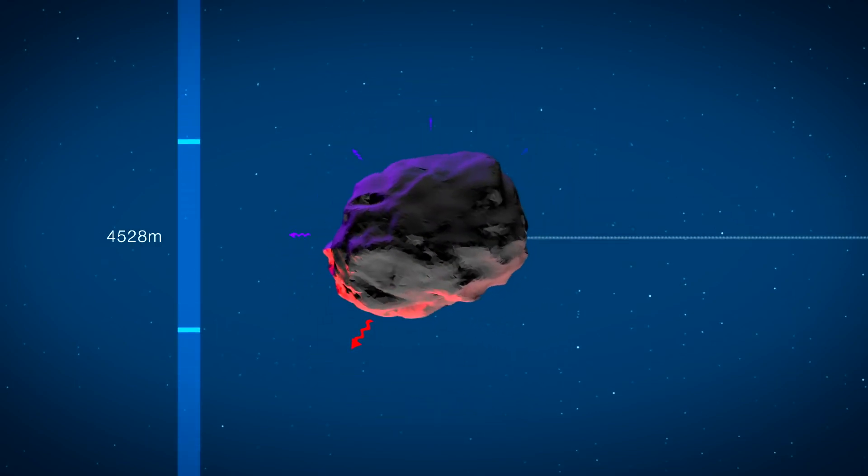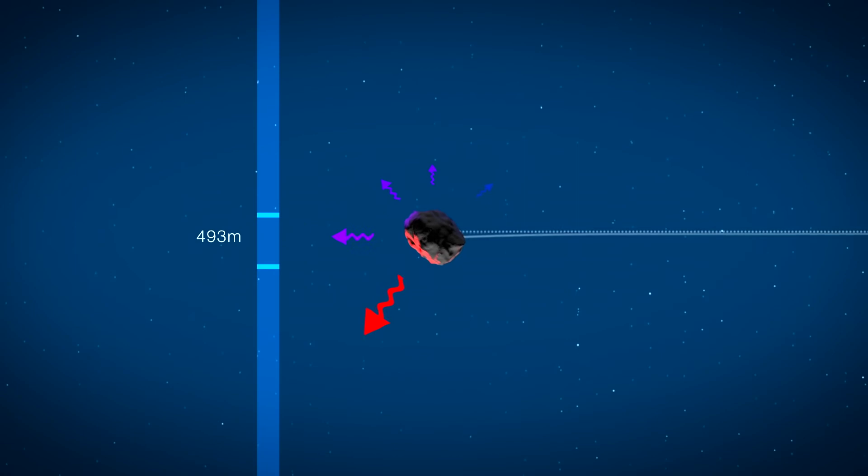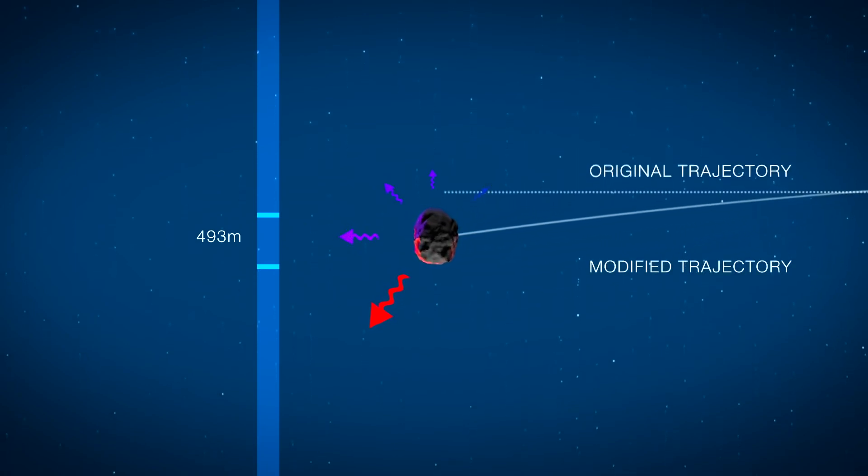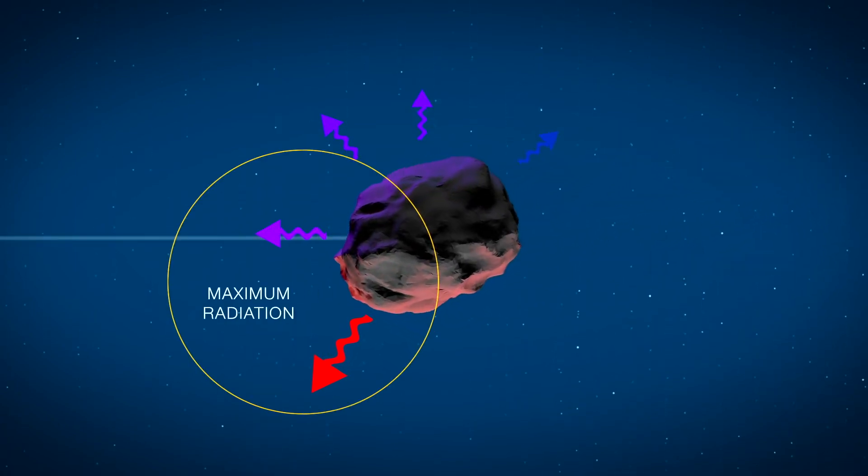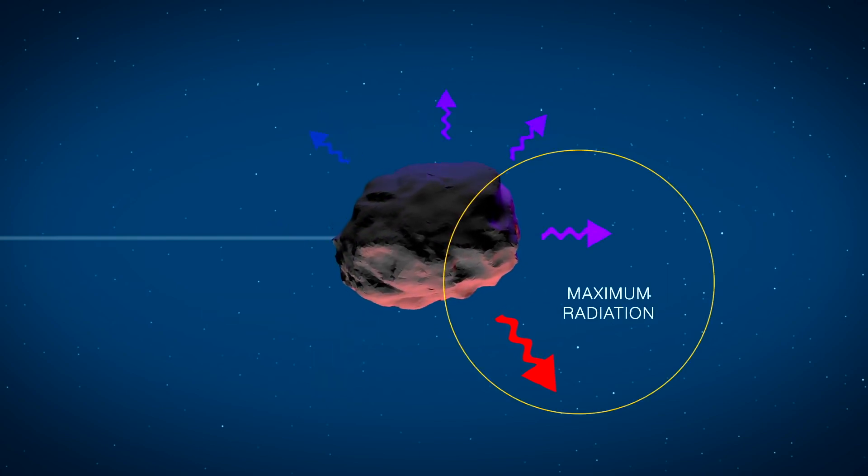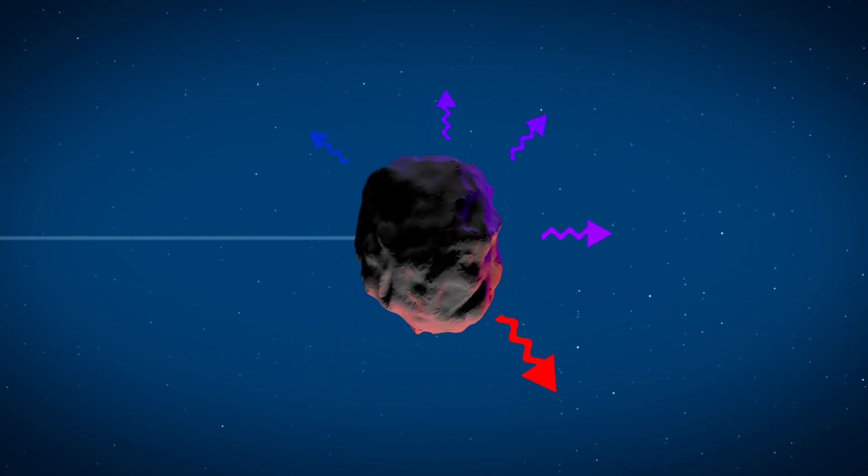On larger asteroids, this doesn't amount to much, but on small ones, it can make a pretty large change over time. Because the surface emits the most heat radiation at the end of the day, the direction the asteroid rotates can ultimately determine what happens in the long run.